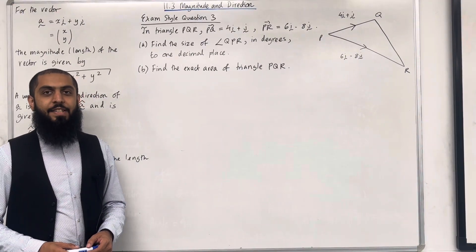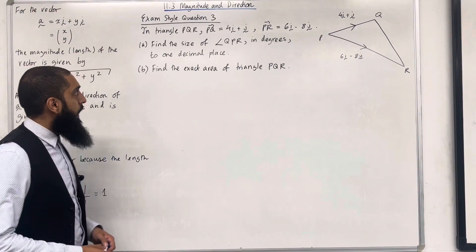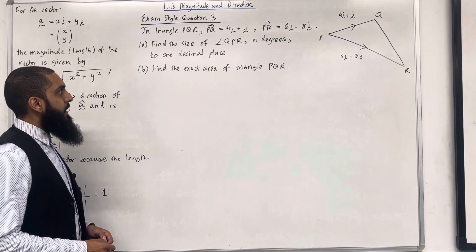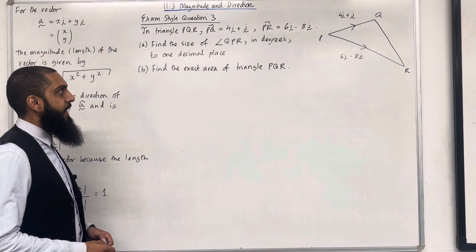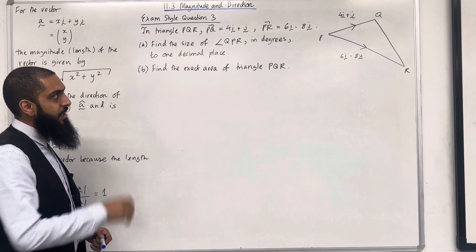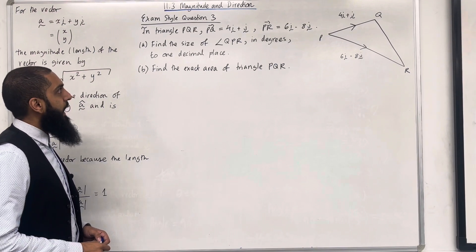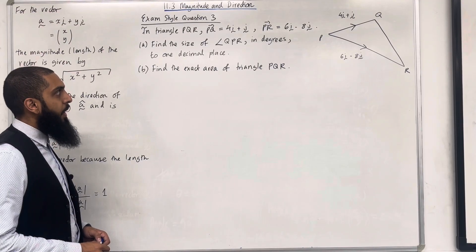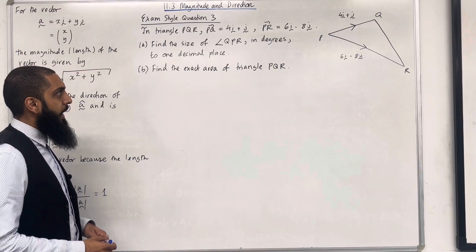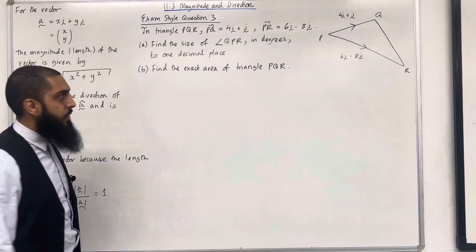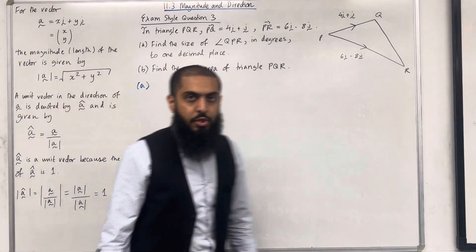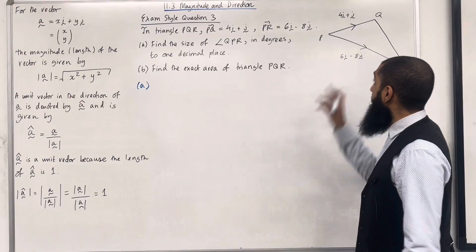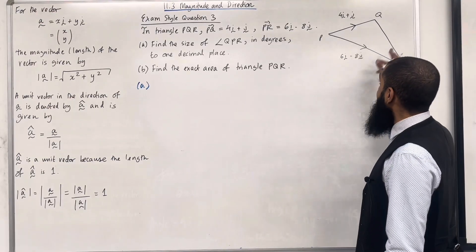Here is exam style question 3. In triangle PQR, vector PQ = 4i + j and vector PR = 6i − 8j, as indicated on the diagram. Part A: find the size of angle QPR in degrees to one decimal place. To solve this, I need to work out the length of each side of the triangle.